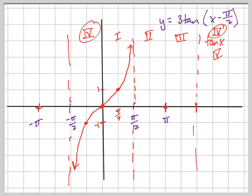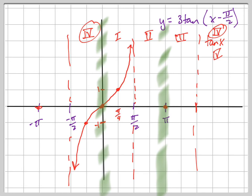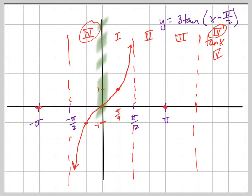Your typical cotangent graph looks very similar, but the asymptotes would be at 0 and pi instead, and the graph goes positive then negative — the opposite direction. The cotangent graph is actually a shift of 90 degrees, which is why it's called co-tangent. It's not quite just a shift, it's also a flip, but tangent and cotangent are co-functions of each other — 'co' standing for complementary, like sine and cosine.